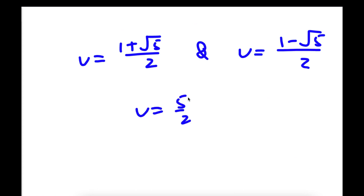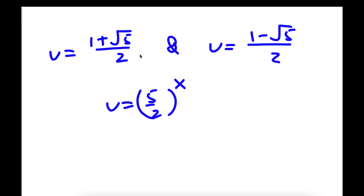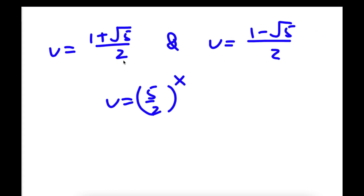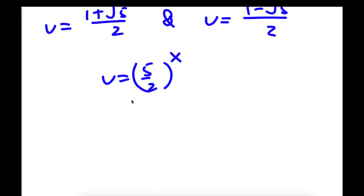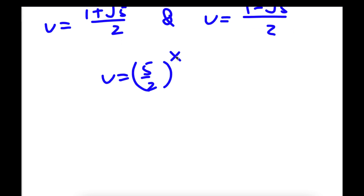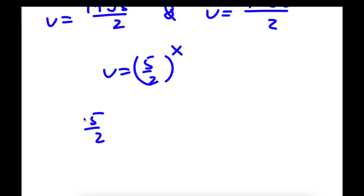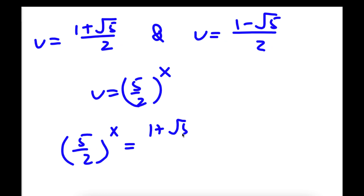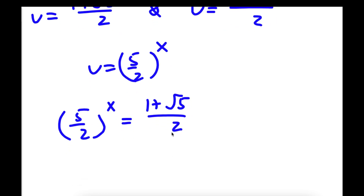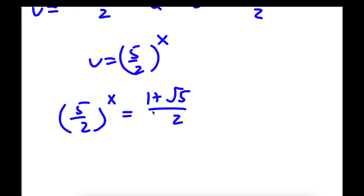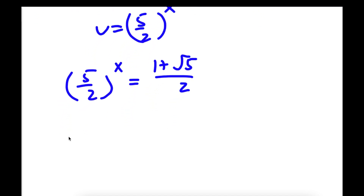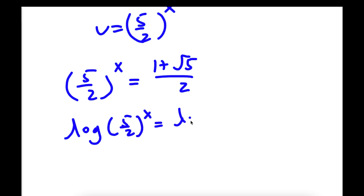Since u equals 5 over 2 to the power of x and I have two values of u, let's first try 1 plus square root of 5 over 2. Substituting in, I get 5 over 2 to the power of x is equal to 1 plus the square root of 5 over 2. I can take the log on both sides: log of 5 over 2 to the power of x is equal to log of 1 plus the square root of 5 over 2.